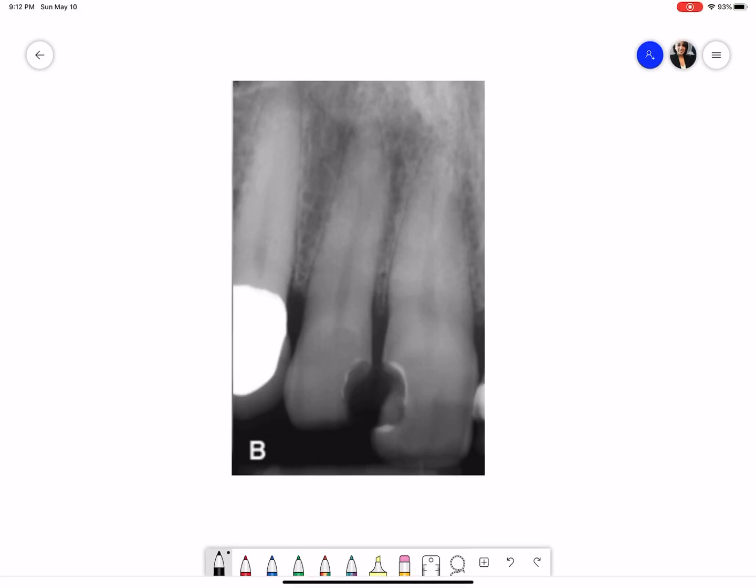The first step is to identify the type of the radiograph. So this is an intraoral periapical radiograph or an IOPA. This is an intraoral periapical radiograph of the maxillary right quadrant. I know this because I look at this radiograph like I am looking at a patient. So that's my first step.